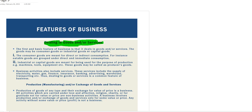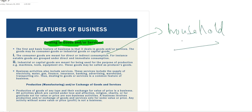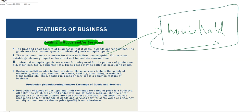The first and basic feature of the business is that it deals in goods and services. The goods may be consumer goods or industrial goods. Consumer goods are the goods which are used by the consumer for household needs — products which are purchased by consumers to satisfy their household needs.